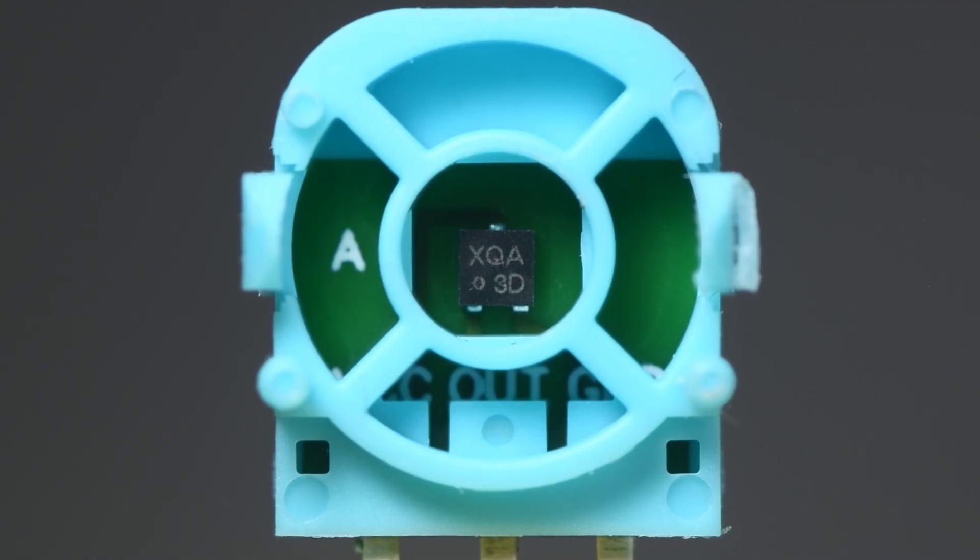The IC has an XQA and I would say this is a date or lot code, and I expect the 3D to be the marking code. Either way this is the same TMR sensor IC that is in the JS13 Pro sticks. This will be a big test - same sensor IC as the JS13 Pro but a completely different joystick mechanism. So it will be very interesting to see how the range error compares.